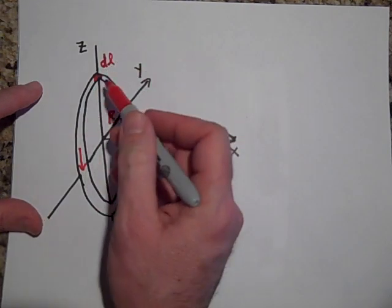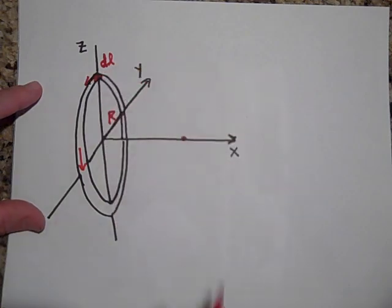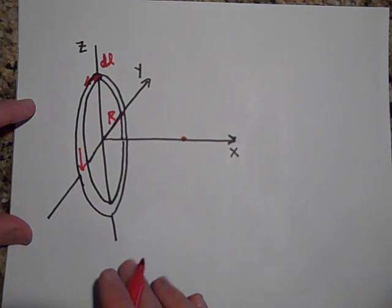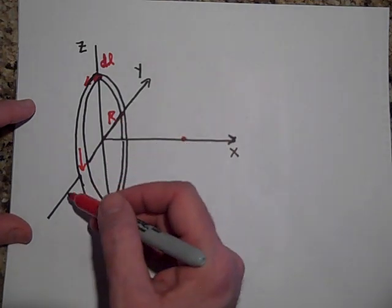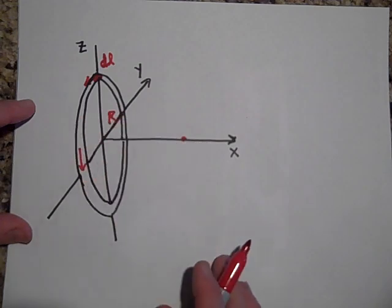And DL is coming out this way. That's the direction of DL. It's coming out that way. It's actually pointed in the negative Y direction right now. At the top it's pointing in the negative Y direction.